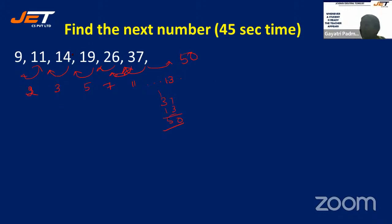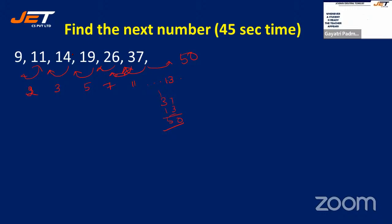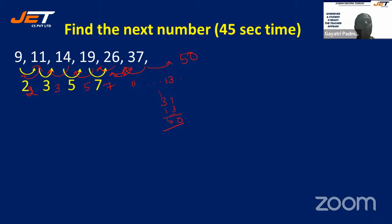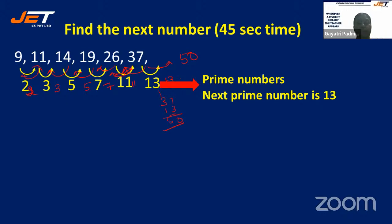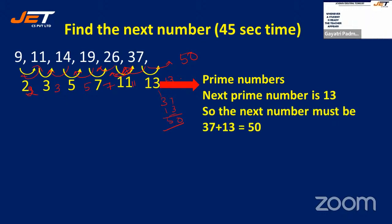If you are not able to get any clue, find the difference between consecutive numbers and try to get some connectivity. Here the connectivity is prime numbers. Adding the next prime gives the next term. So 37+13=50 is the answer.